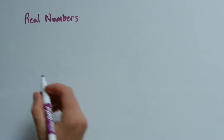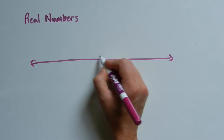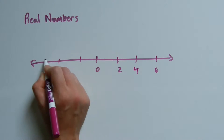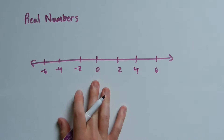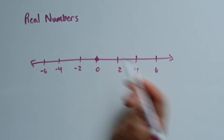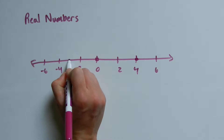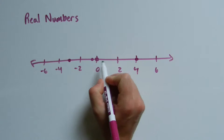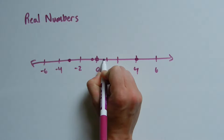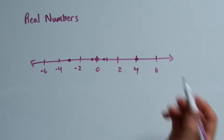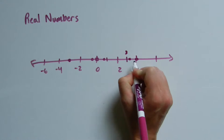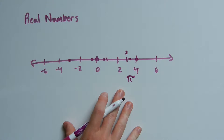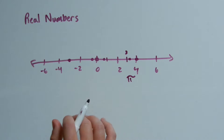Think of real numbers as numbers that can be represented on a number line. So if you have a number line, we'll have zero, count by twos, and so on. A real number could be zero, it could be four, it could be negative three, negative point five, three quarters, or even three point one four one five nine — pi — and so on. A real number can be represented by a dot on a number line, and each dot corresponds to only one real number.